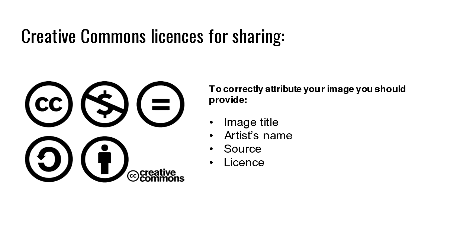To correctly attribute your image you need four pieces of information, and some of these can be provided through a link back to the original source. You need the name of the image — often on Flickr you'll see the image name underneath the picture. You'll need the artist's name, and you can just put a link back to their profile. The source — if that was Flickr and the artist profile has been linked, then that covers both of those in one go. And finally, the details of the license.